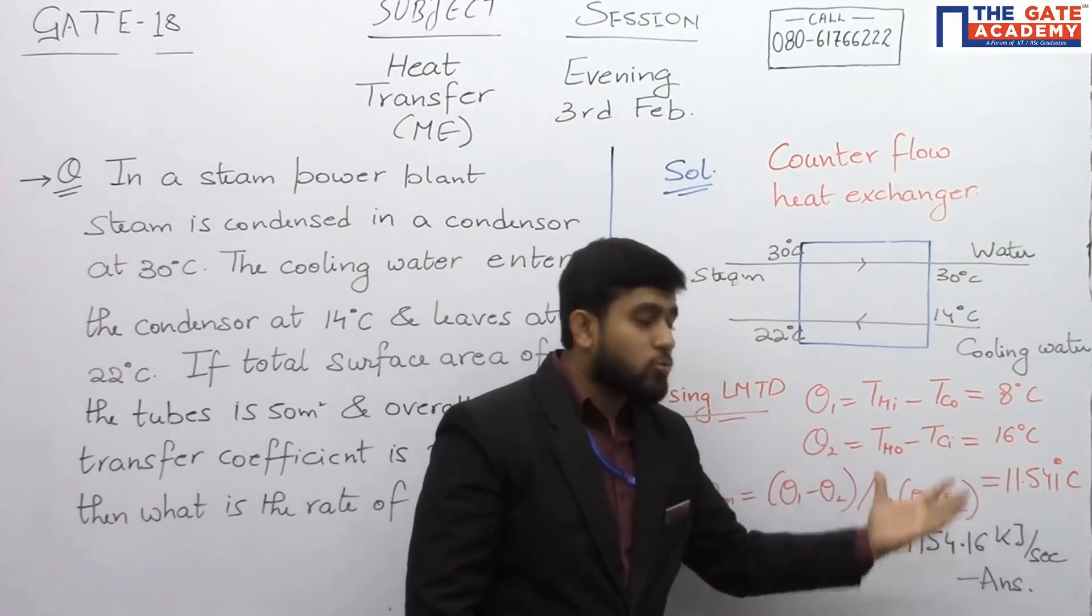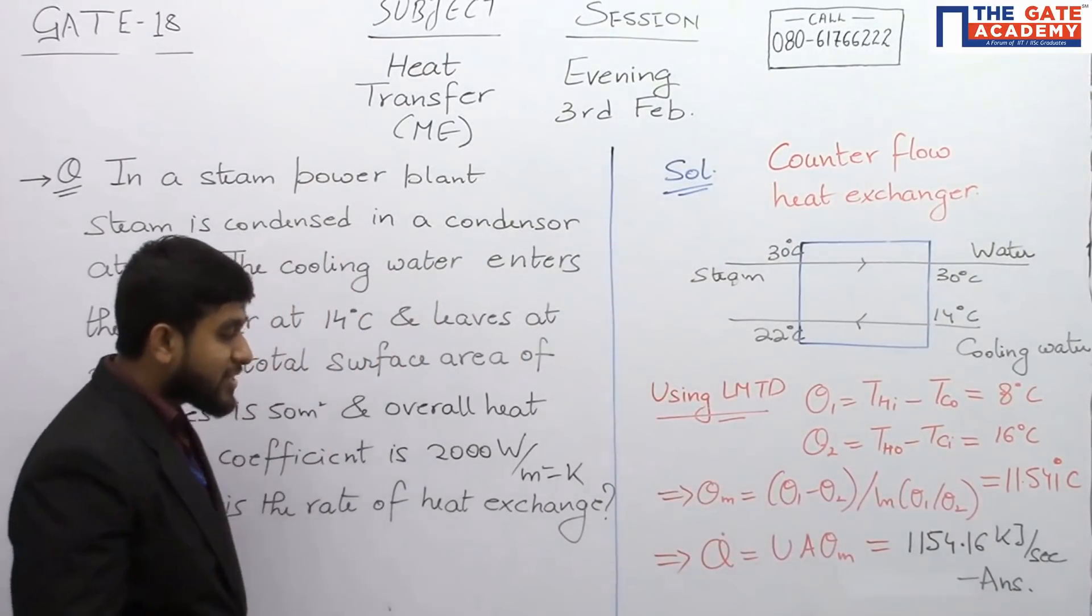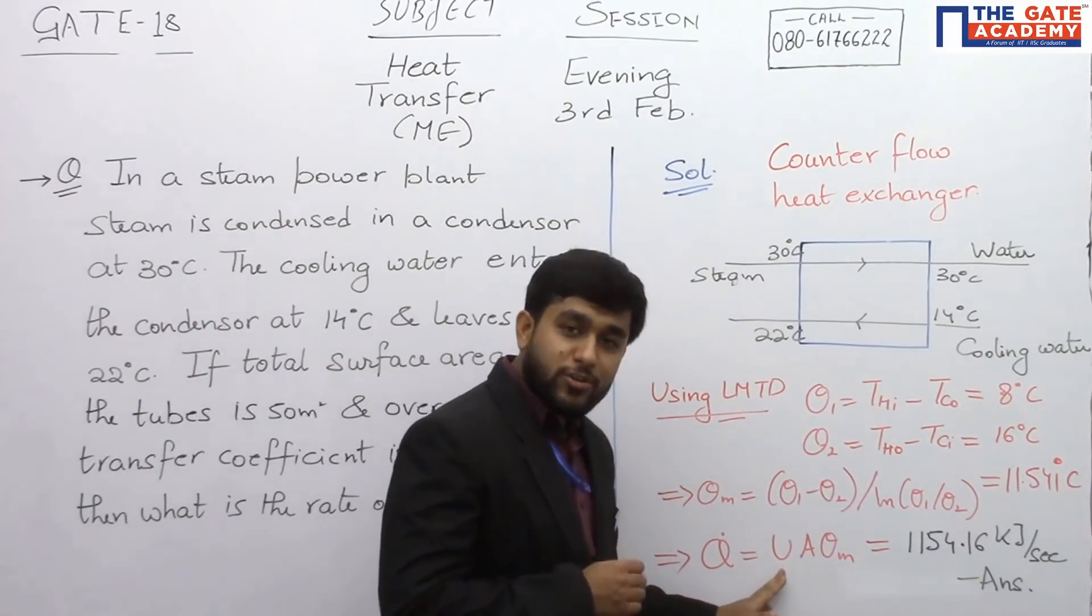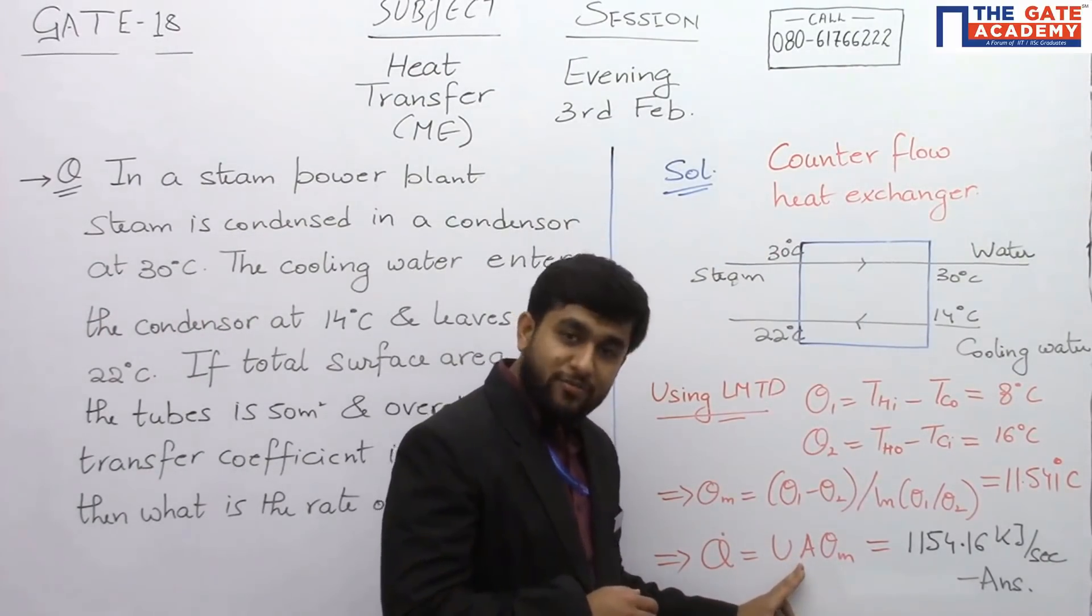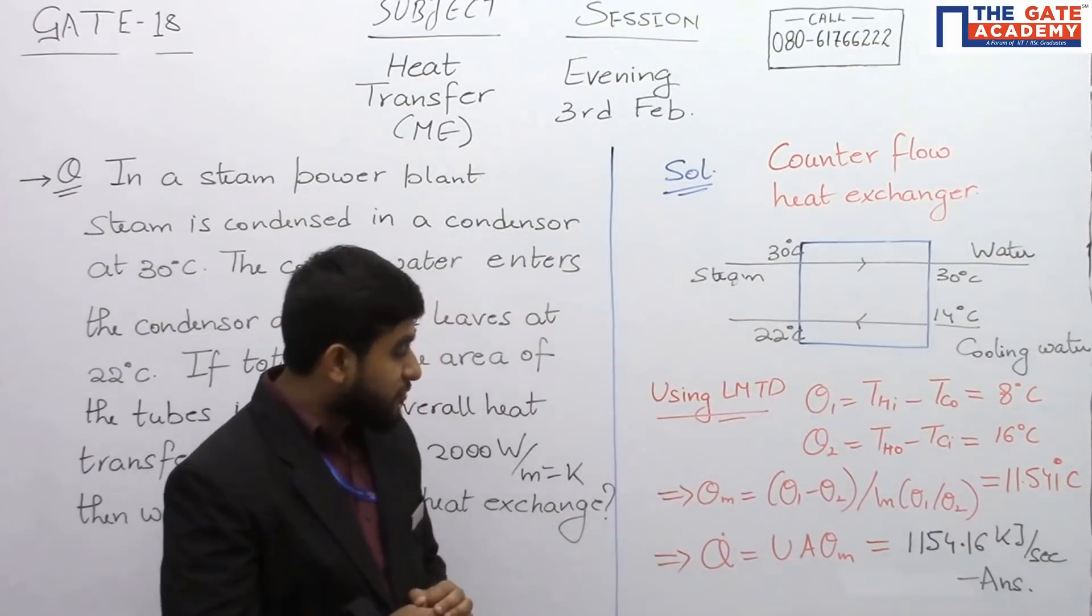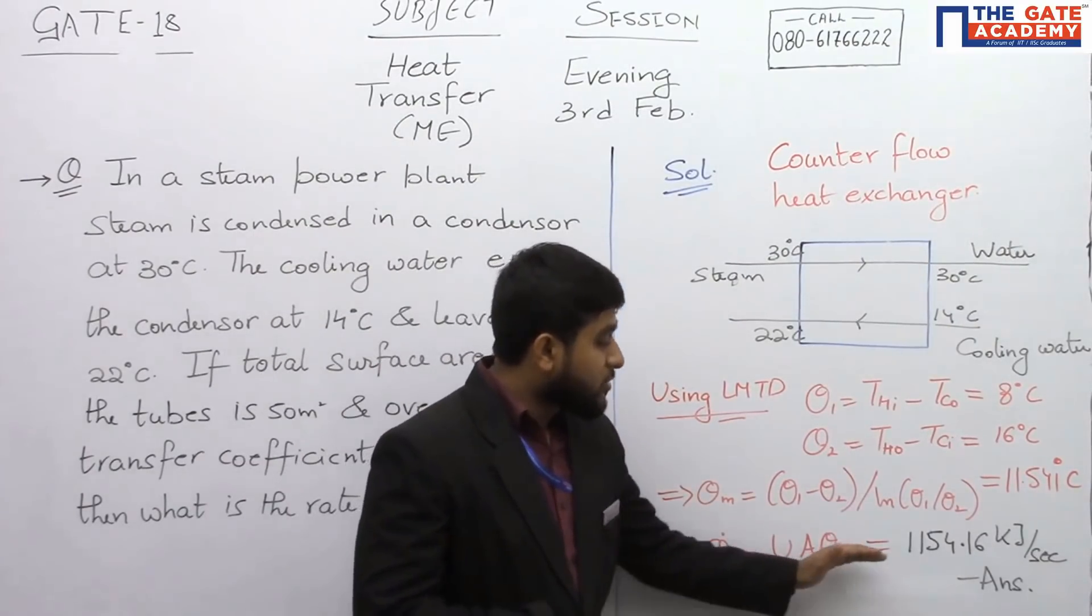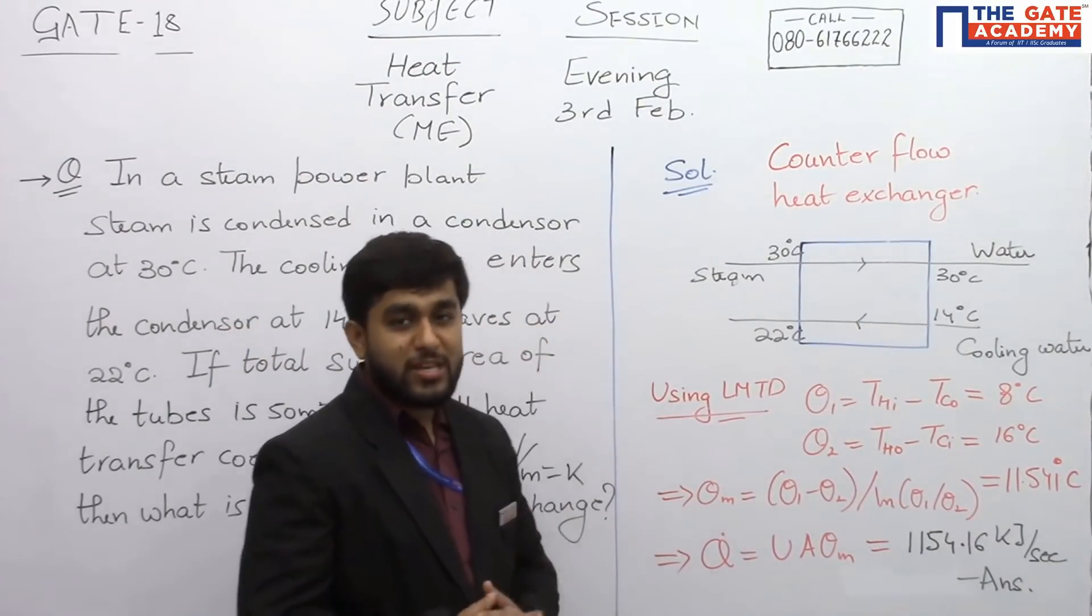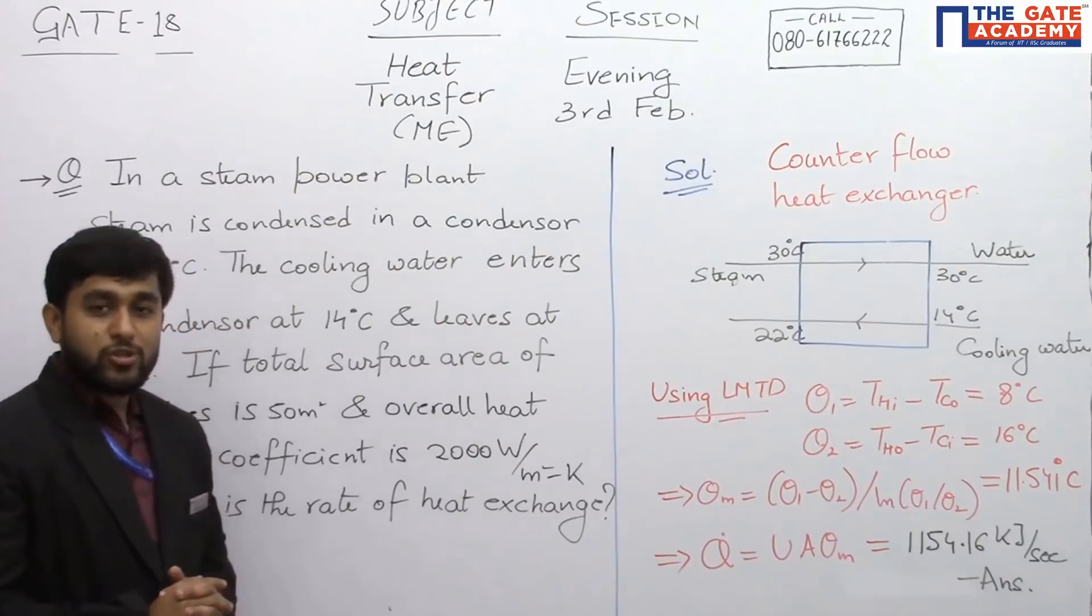Now what will be the heat transfer rate? It will be equal to overall heat transfer coefficient into the interface area into the mean temperature difference. Substitute the values and you will get an answer that will be 1154 kilojoule per second.